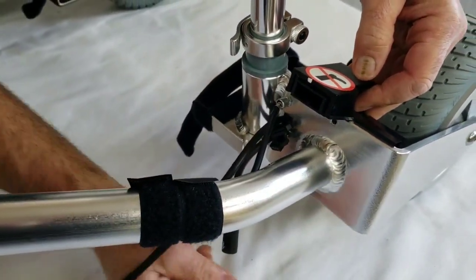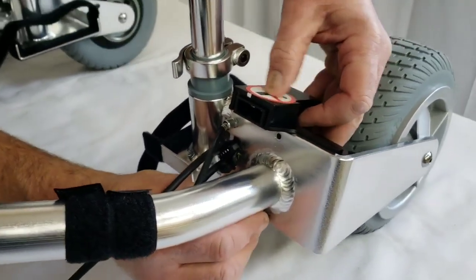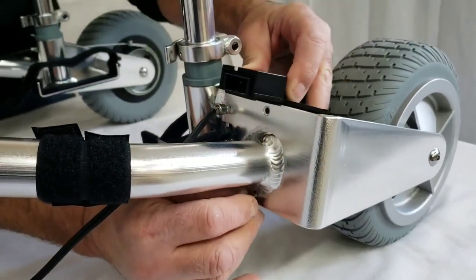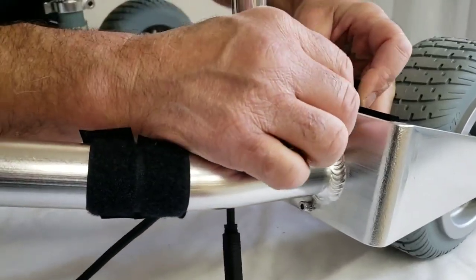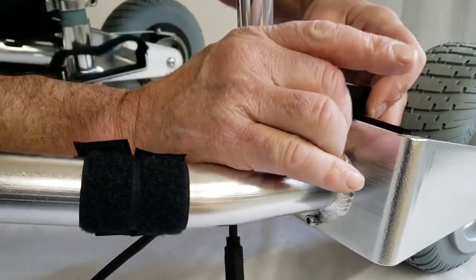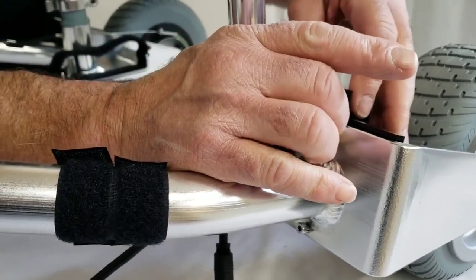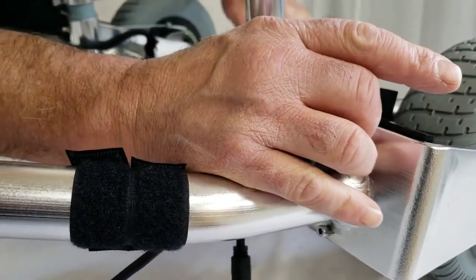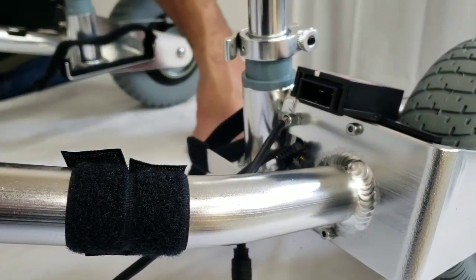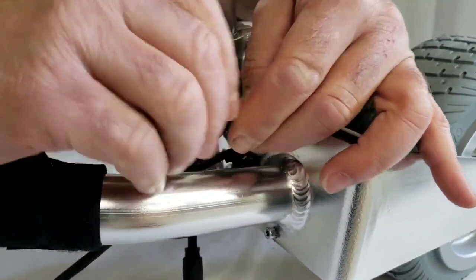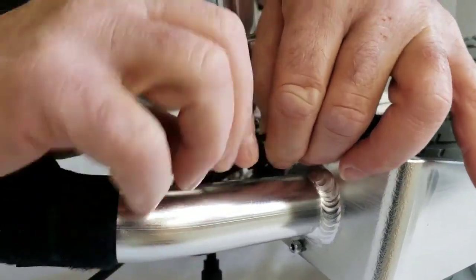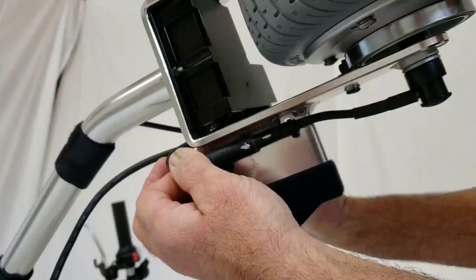Your next step would be to insert your Allen head screws and engage the threaded holes in the housing. Get them started by hand. If you get one started, do not tighten it yet. Wait until you get the other one started. Now take your 3mm Allen wrench and tighten the screws.